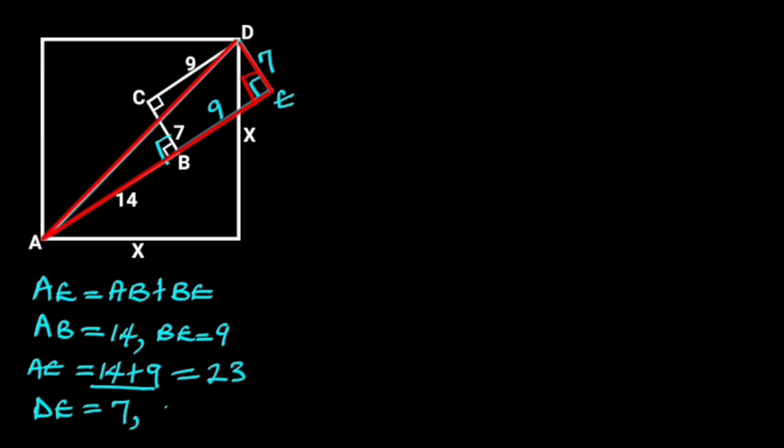Next, we are going to apply Pythagorean theorem in this triangle to find the diagonal AD. From Pythagorean theorem, AD squared is equal to AE squared plus DE squared. If we go ahead to substitute the value of AE and DE in this equation,